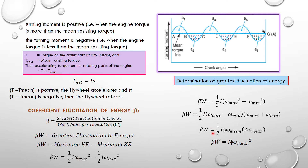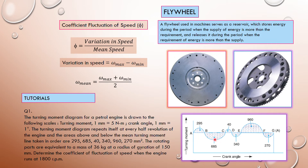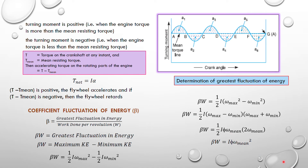By manipulating the kinetic energy equations, you arrive at the formula: beta × W = I × omega_mean² × phi, where omega_mean is the mean speed. The symbol phi represents the coefficient of fluctuation of speed, defined as the variation in speed (maximum speed minus minimum speed) divided by the mean speed (maximum plus minimum speed over 2).